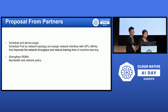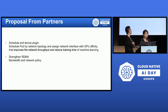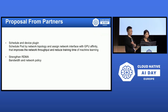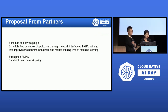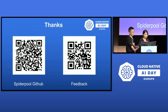SpiderPool actively collects proposals from community partners. For instance, there is a need to extend scheduling features for AI jobs to improve network throughput according to network topology, which could further reduce AI training time. For example, managing network bandwidth and network policy for RDMA. These proposals will be included in the roadmap. SpiderPool places great importance on community proposals. That's everything — thank you.